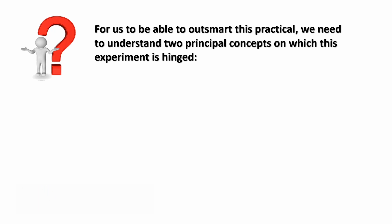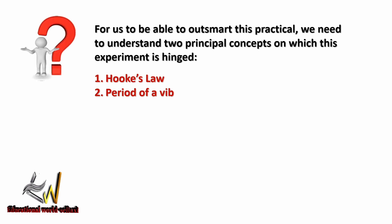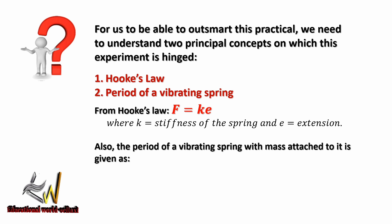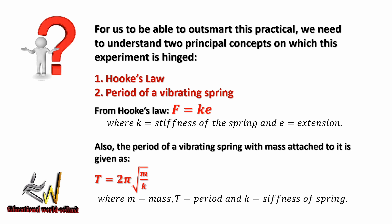To outsmart this practical, we need to understand two principal concepts on which this experiment is hinged: Hooke's Law and the period of a vibrating spring. From Hooke's Law, force equals ke, where k is the stiffness of the spring and e is the extension. The period of a vibrating spring with a mass attached is given by T = 2π√(m/k), where m is the mass, T is the period, and k is the stiffness of the spring.